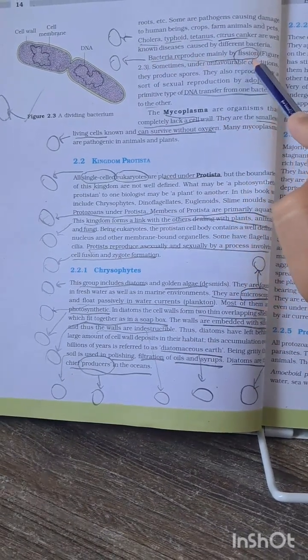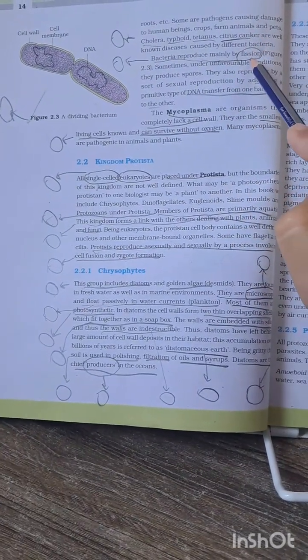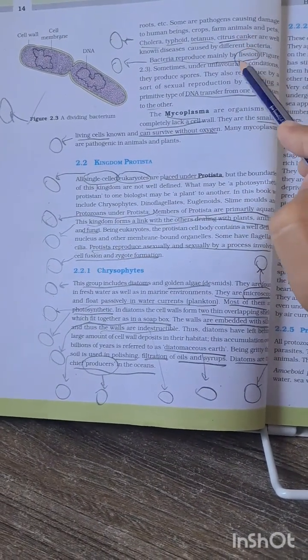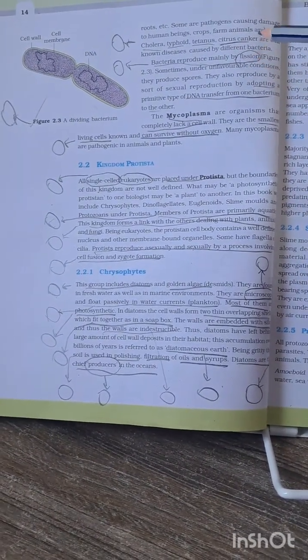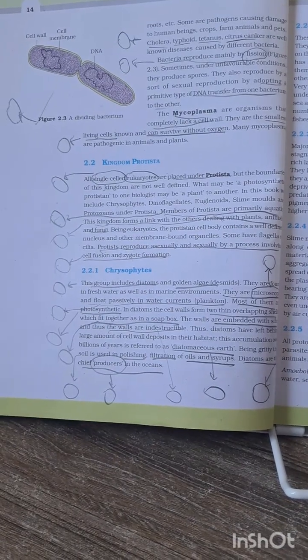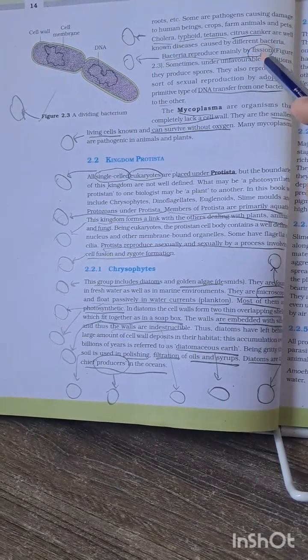Bacteria reproduce mainly by fission. This MCQ has been asked many times - by which method bacteria reproduce. They will give you options like fission, fusion, etc. You have to choose the fission option. Fission is a primitive type of DNA transfer from one bacterium to another.